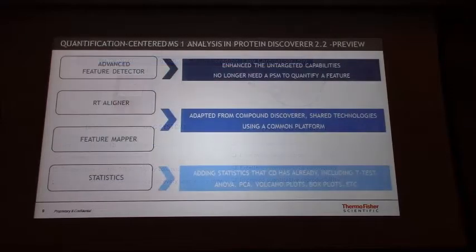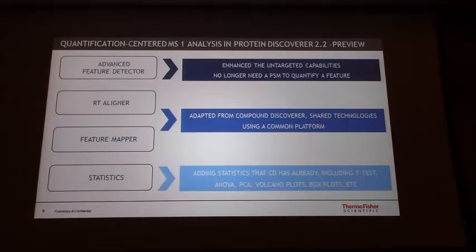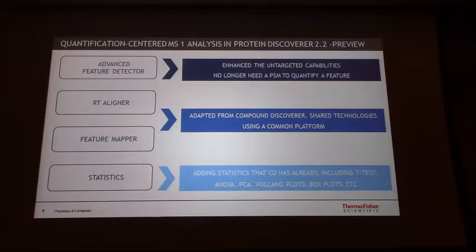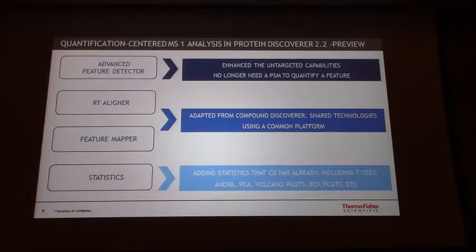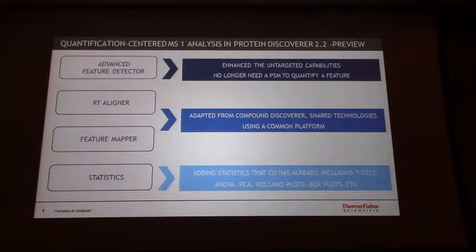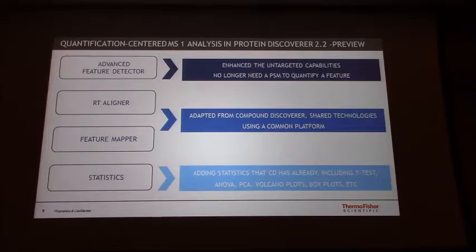Within the Proteome Discoverer 2 platform, we have introduced an advanced feature detector that allows us to identify more features within the different runs. We have retention time alignment, which will allow us, if we have certain deviations within the different runs, to align and get a composite master database. We have a feature mapper that maps the identifications to those features. And of course, we have a statistics package that allows us to do T-tests, ANOVA, normalization scans, and comparisons across different runs.